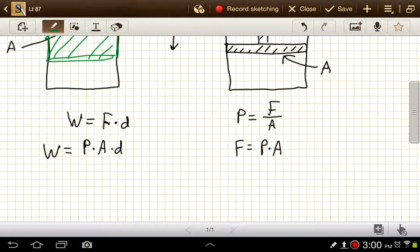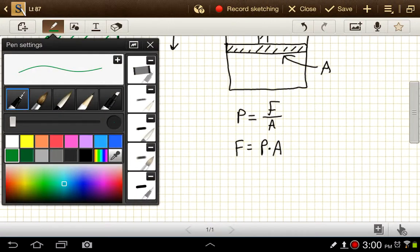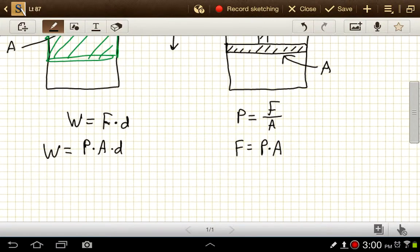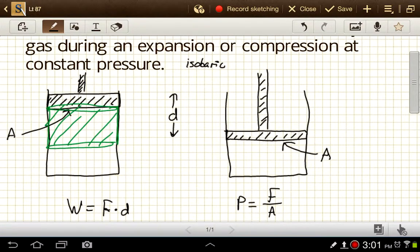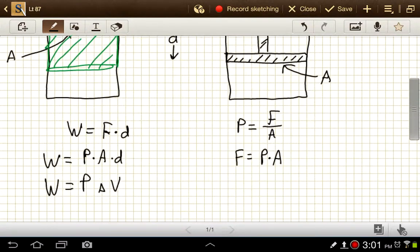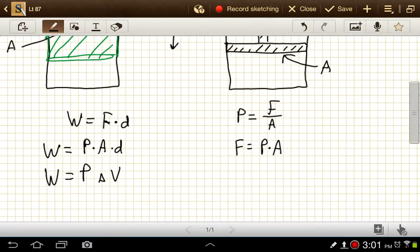So area times distance, we can just write that as volume, or in this case we'll write it as change in volume. Not the initial volume or the starting volume, but the change in the volume of the space that's available to that gas. So to get work, if we have a constant pressure situation, we just do the constant pressure times the change in volume.